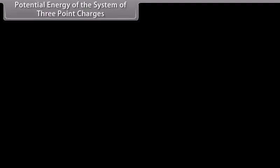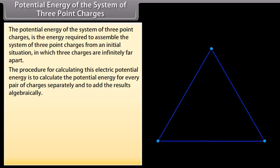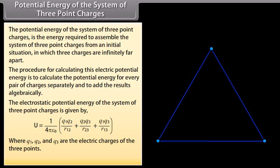Potential energy of the system of three point charges. This is the energy required to assemble three point charges from an initial situation in which they are infinitely far apart. The procedure is to calculate the potential energy for every pair of charges separately and add the results algebraically. The electrostatic potential energy is given by U equals 1 over 4π ε₀ multiplied by (Q1 Q2 upon R12 plus Q2 Q3 upon R23 plus Q1 Q3 upon R13), where Q1, Q2, and Q3 are the charges and R12, R13, and R23 are their separation distances.